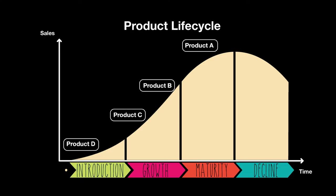Seeing this concept from another perspective is basically what the Boston Matrix is. It still allows you to see which product is in which part of its product lifecycle, but it gives you another perspective and a better understanding of what the marketing department is trying to do.